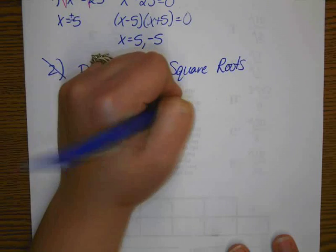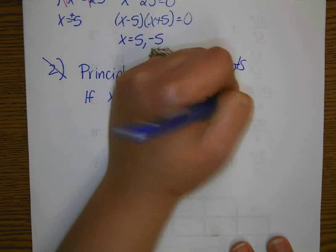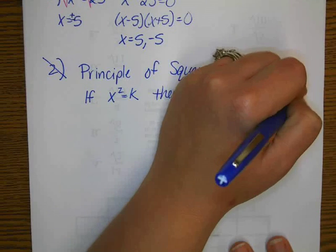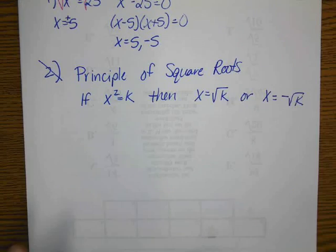then, just like we said before, you can square root both sides, x equals square root of k, or x equals negative square root of k. And that second part is the really important solution that most students will forget.